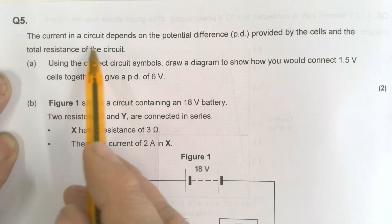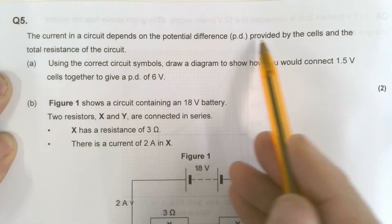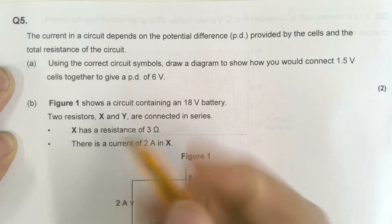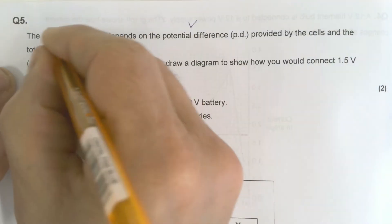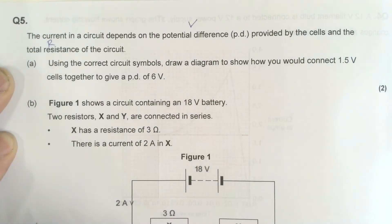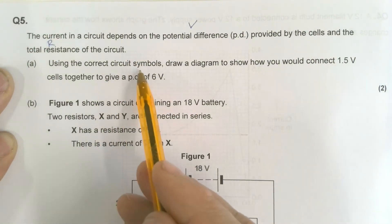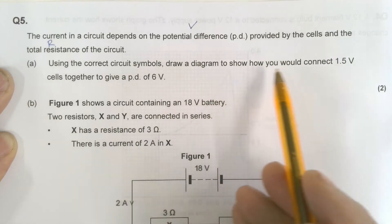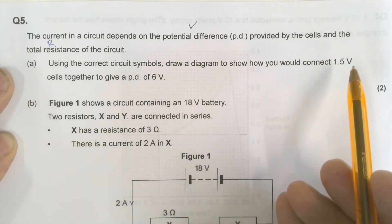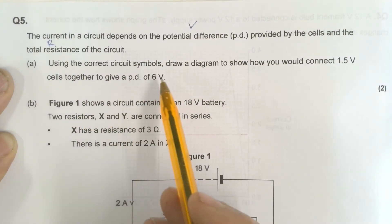So the current in the circuit depends on the potential difference provided by the cells and the total resistance of the circuit. Using the correct circuit symbols, draw a diagram to show how you would connect 1.5 volt cells together to give a potential difference of 6 volts.